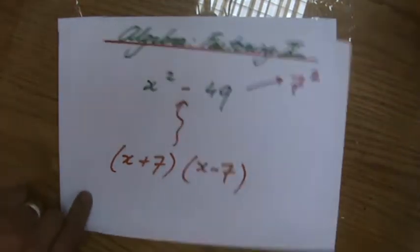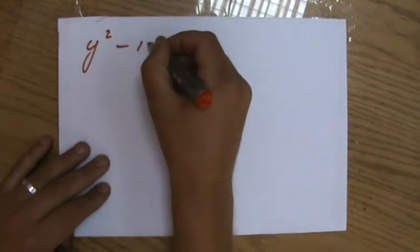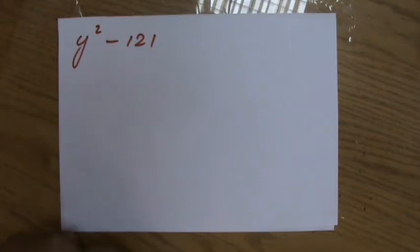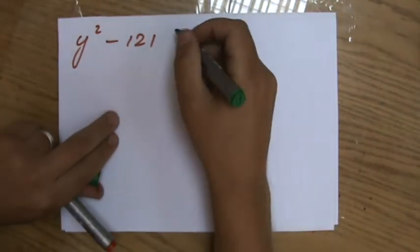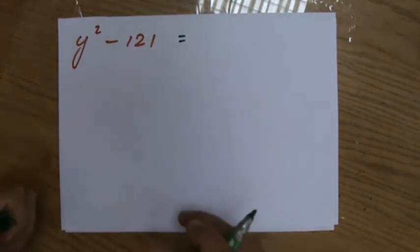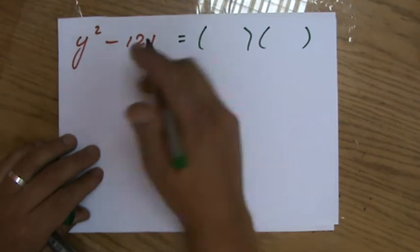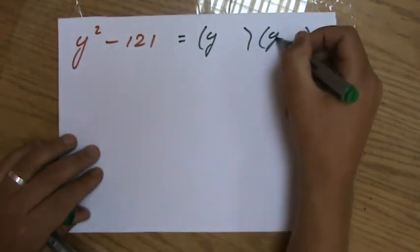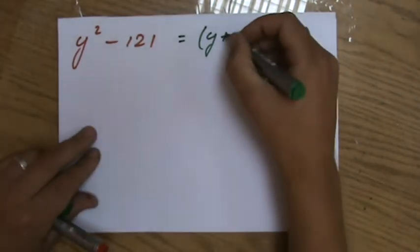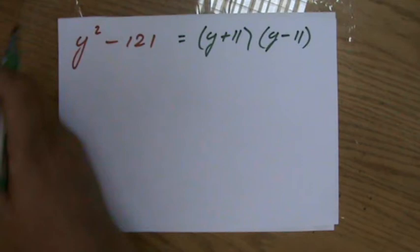So let me give you a few more examples. Y squared minus 121. If you get experience with this, with factoring, you will see this instantly. Because of course, there is no common factor. Of course, it's not grouping. It's not the normal factoring. No, this is the difference of two squares. So I can put y there, plus and minus 121, 11 squared. Yes, of course. Plus 11, minus 11. That's it.